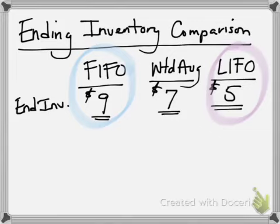The ending inventory under FIFO ends up being the most recent cost, so it's the highest and more closely resembles the replacement cost for inventory. One could argue, though, that the FIFO income statement was using those early costs and may not necessarily have a good representation relative to the matching principle. LIFO, on the other hand, is showing older, outdated values on the balance sheet — the very low $5 asset value — but used the more recent expenditures to record cost of goods sold, so the income statement is a little more reflective of current values.